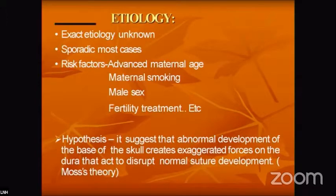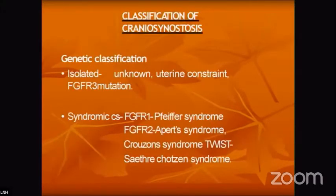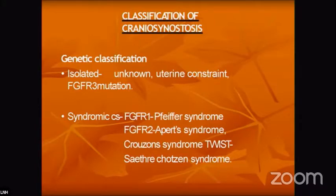The etiology is not exactly known and sporadic cases most commonly occur. Risk factors include advanced maternal age, maternal smoking, male sex, and fertility treatment. Craniosynostosis can be classified on genetic grounds. Isolated craniosynostosis has an unknown exact cause but can be classified based on uterine constraints and FGFR3 mutations.